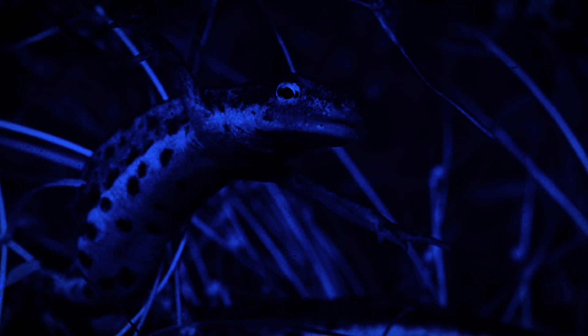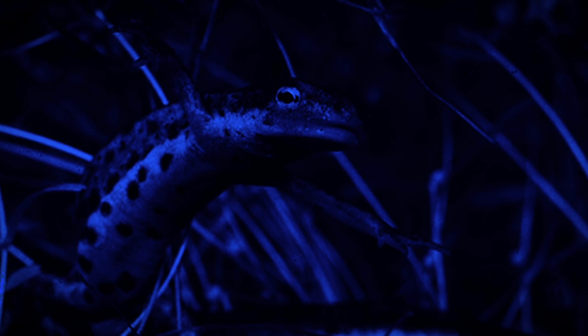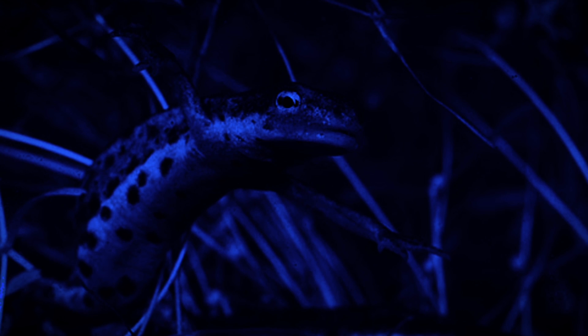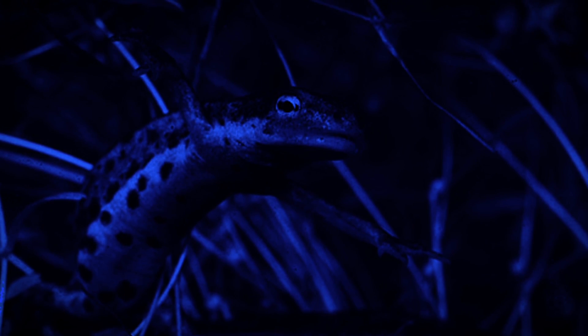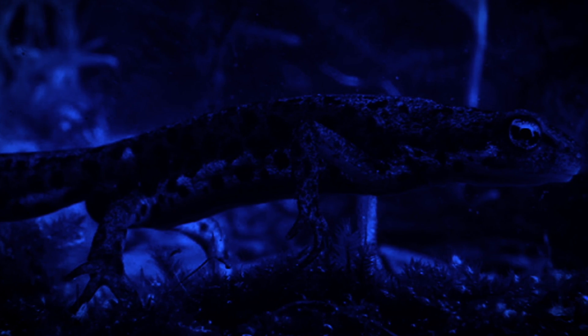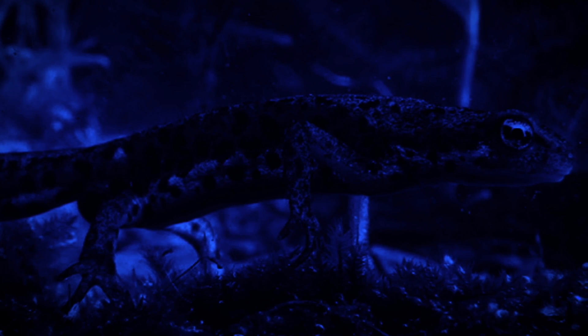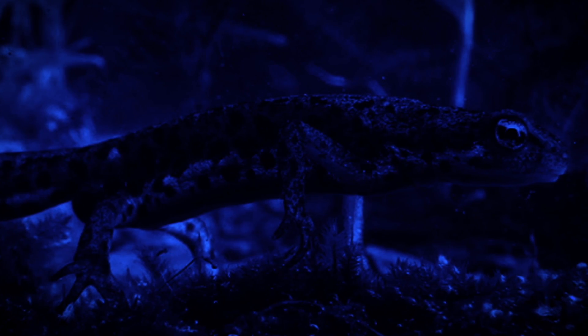They also have the ability to change genus according to the needs of the species. Finally, as a defense method, they are able to stab predators with their own ribs. That's right, just as you heard it. These little creatures can pierce the skin on their sides with their sharp ribs to use as stingers. Scary, isn't it?